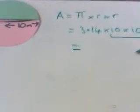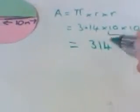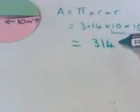10 times 10 is 100, so we've got 3.14 times 100 is 314. We were dealing in meters, so the area must be meters squared.